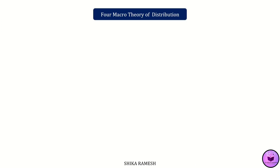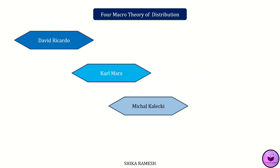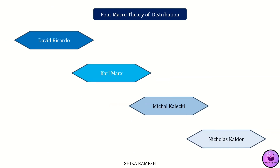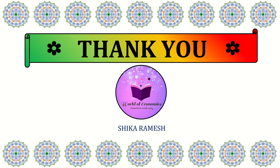There are four macro theories of distribution put forward by David Ricardo, Marx, Kalecki, and Kaldor. We shall see each of these theories in the upcoming videos. If you like the video, do subscribe to the channel and share the videos with your friends.